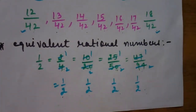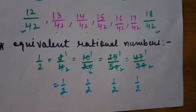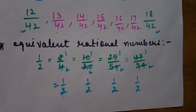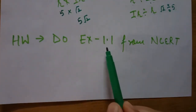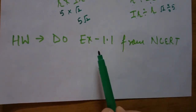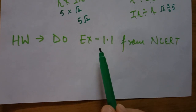In today's lecture, we discussed the number system and covered natural numbers, whole numbers, rational numbers, irrational numbers, and real numbers. We also covered how to find rational numbers between two rational numbers and equivalent rational numbers. If you have any doubt, please mention it in the comment section. For homework, do the questions of exercise 1.1 from NCERT and also revise all the theoretical parts from NCERT. Thank you very much.